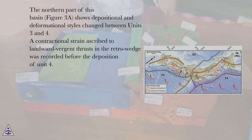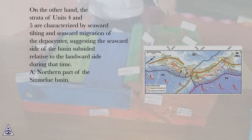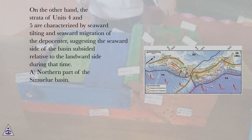The northern part of this basin, figure 3a, shows depositional and deformational styles changed between units 3 and 4. A contractional strain ascribed to landward vergent thrust in the retro wedge was recorded before the deposition of unit 4. On the other hand, the strata of units 4 and 5 are characterized by seaward tilting and seaward migration of the depocenter, suggesting the seaward side of the basin subsided relative to the landward side during that time.